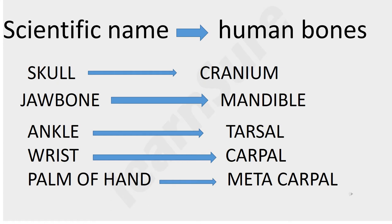Ankle — the scientific name is tarsal. Fourth, wrist — the scientific name is carpal. Palm of the hand — the scientific name is metacarpal. These are five scientific names of human bones.